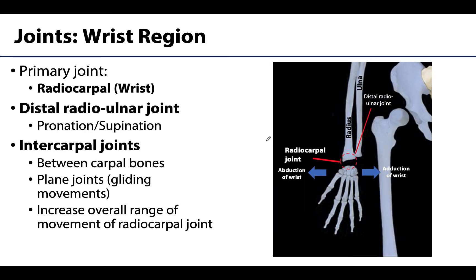The primary joint in the wrist region is the wrist joint, but it's actually called the radiocarpal joint, which tells you exactly which bones are articulating. This joint will be the emphasis of this learning objective, but there are joints close to the wrist joint that often move in unison with it or increase its range of motion. Just proximal to the radiocarpal joint is the distal radioulnar joint, and it is very closely related.